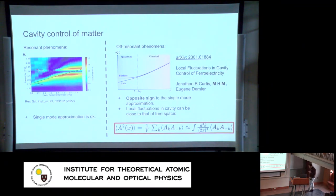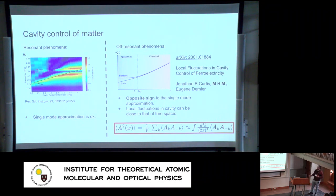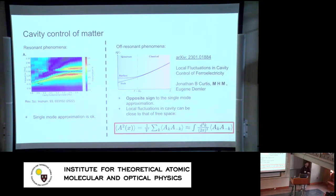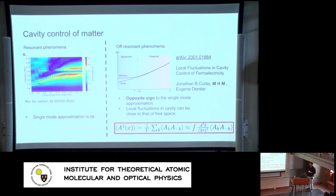There is a problem, but first we must distinguish between two types: cavity control of matter, and matter-resonant control. In the resonant case — thinking about a single cavity mode coupled linearly to a single phonon mode — the cavity mode hybridizes with the phonon mode and the single-mode approximation is fine. However, when changing phases of matter, the quantities we need to compute are off-resonant and involve local vector potential fluctuations summed over all modes, making it unclear whether the single-mode approximation is valid.